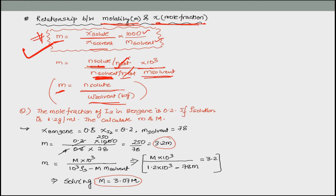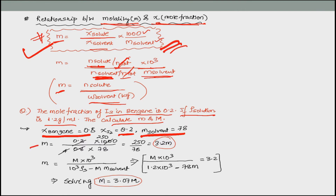Example: mole fraction of I2 in benzene is 0.2, density of solution is 1.2 g/ml. Find molality and molarity. Mole fraction of I2 (solute) = 0.2, mole fraction of benzene (solvent) = 0.8. Molar mass of benzene = 78. Using the expression, molality = (0.2/0.8) × (10³/78) = 3.2 molal. Using the molarity-molality relationship with density 1.2, the only unknown is molarity, giving 3.07 molar.